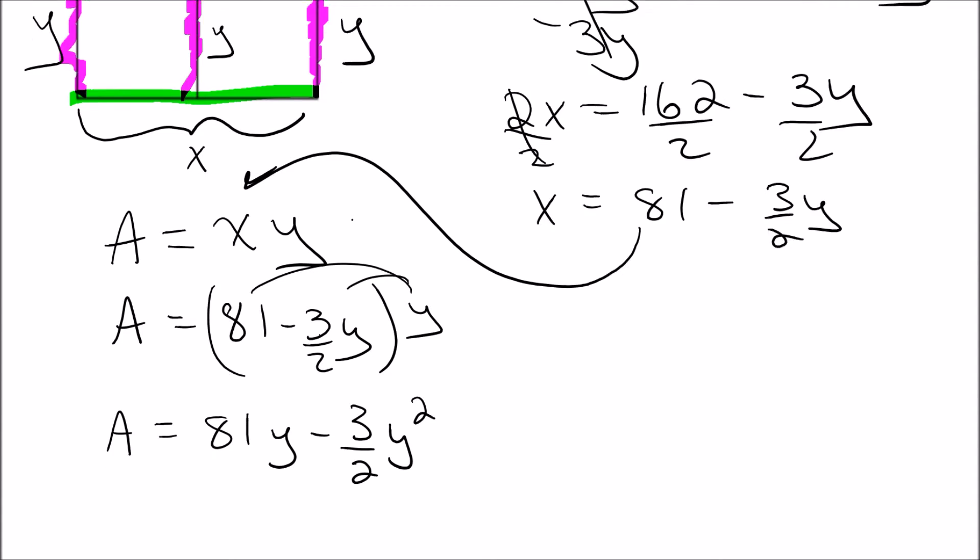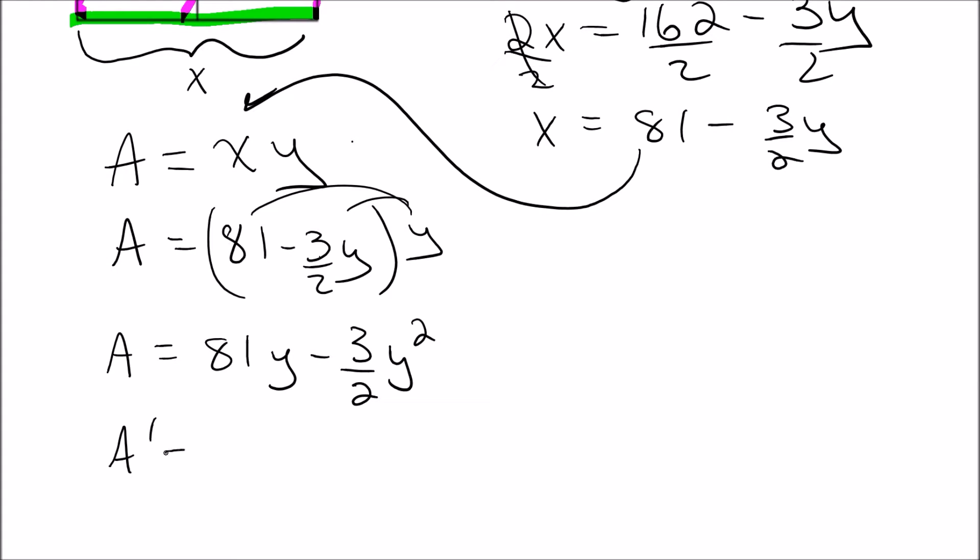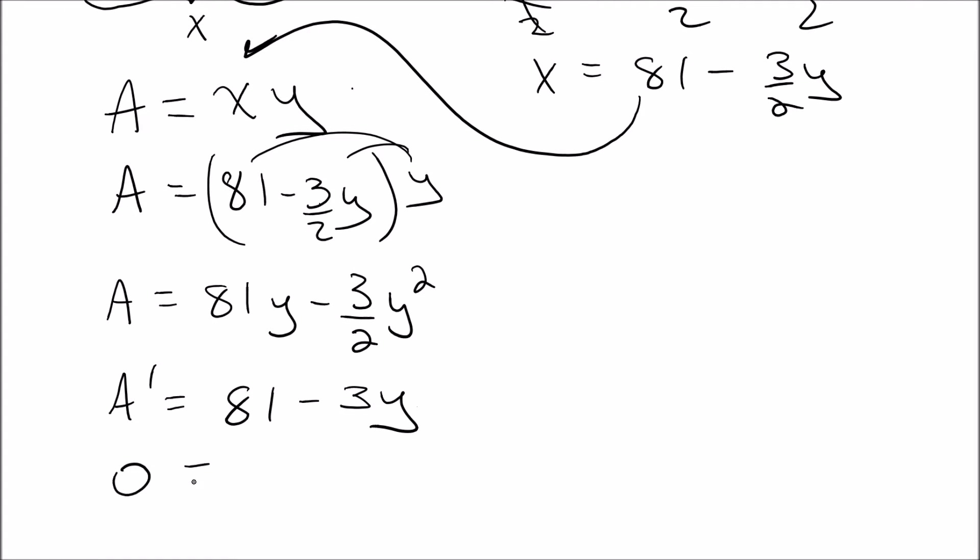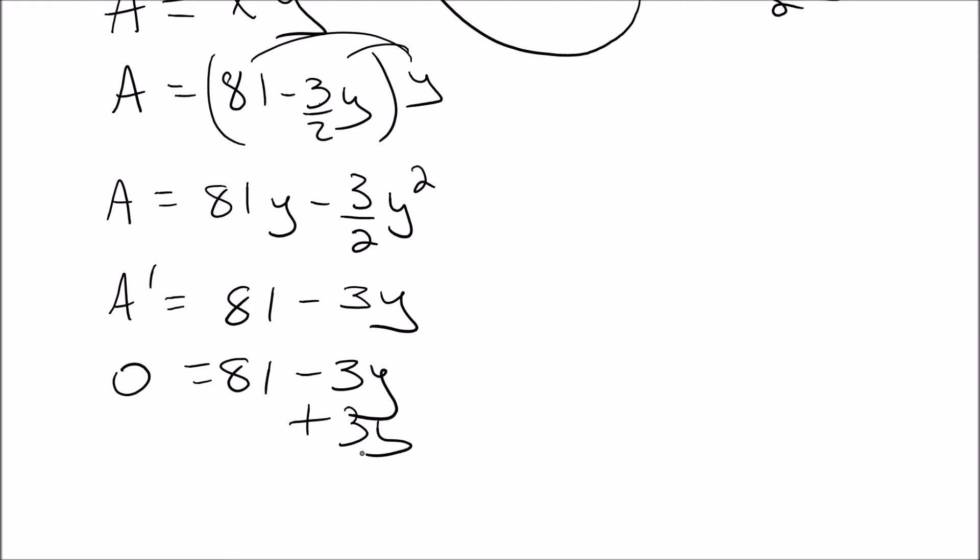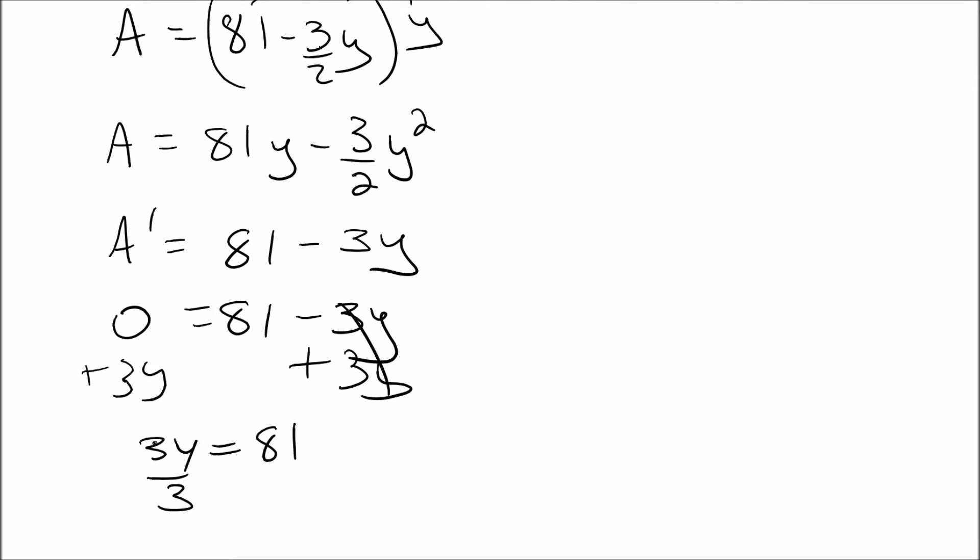Let's go ahead and take the derivative of this. We're trying to maximize this, so the derivative would be 81 minus 3Y. To maximize this, we want to set our derivative equal to zero. So we get zero equals 81 minus 3Y, and add 3Y to both sides.